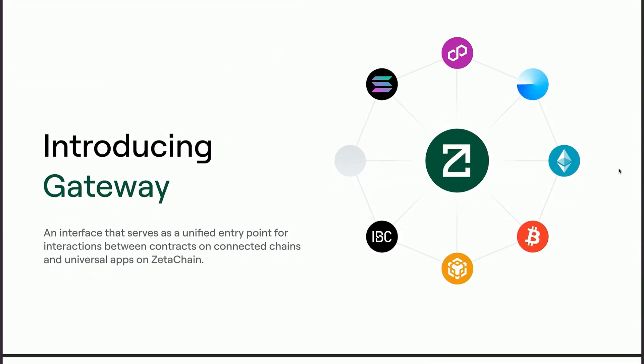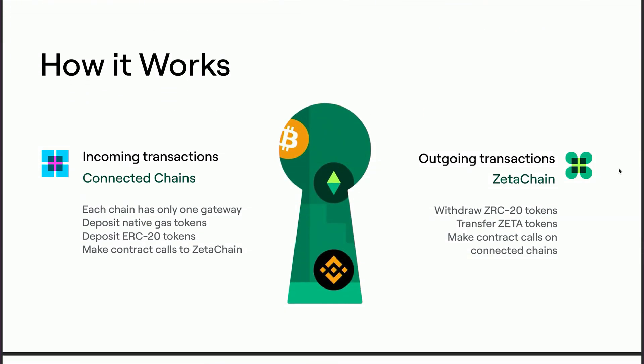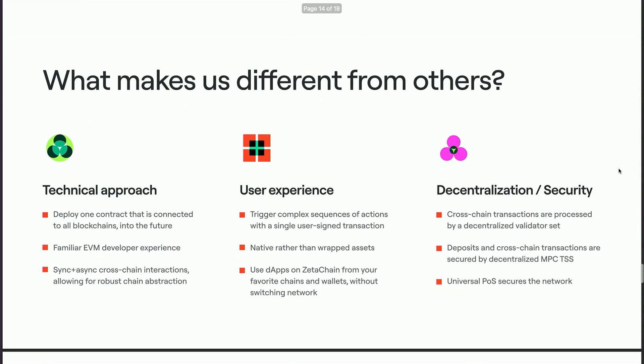We also introduced Gateway — our v2 of smart contracts on ZetaChain — several months ago. With Gateway, a developer can now execute smart contract calls on different chains from ZetaChain. So if you wanted to swap an asset and then deposit or launch it into an AI agent launcher on Solana, you can do that in a single product UI/UX. Every connected chain has one gateway contract and one TSS address. Our observer validators pick up deposits and we handle all the bridging and messaging ourselves, completely eliminating reliance on third-party bridges.